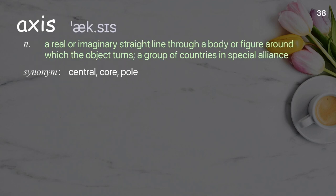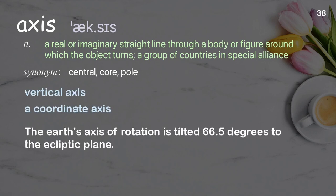Axis: a real or imaginary straight line through a body or figure around which the object turns; a group of countries in special alliance. Examples: vertical axis, a coordinate axis. The Earth's axis of rotation is tilted 66.5 degrees to the ecliptic plane.